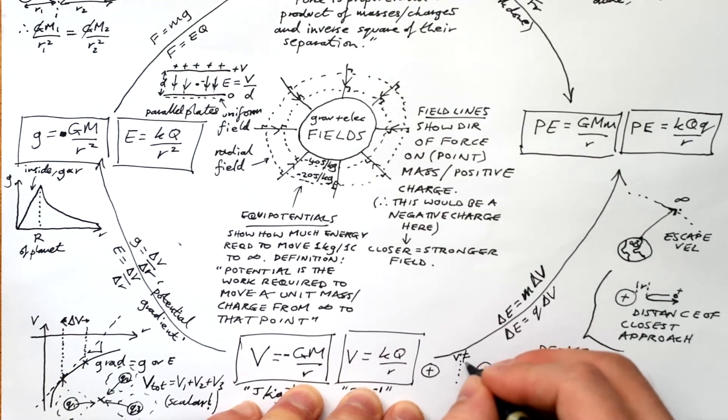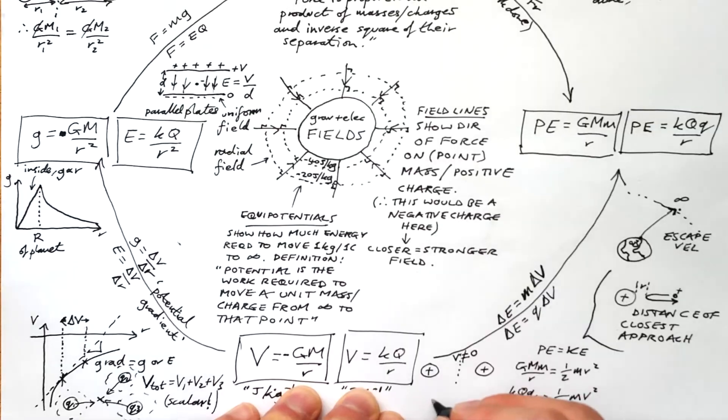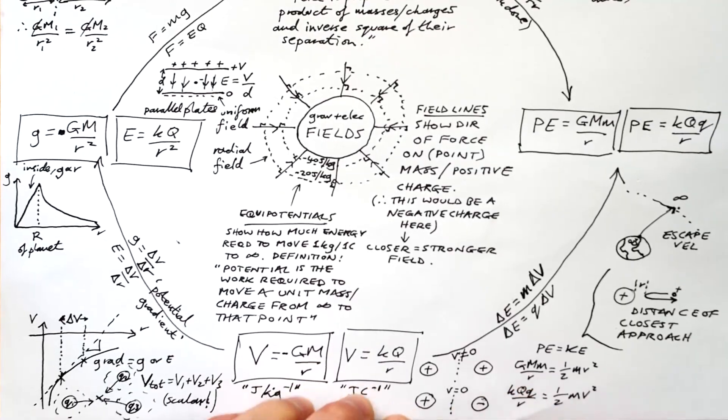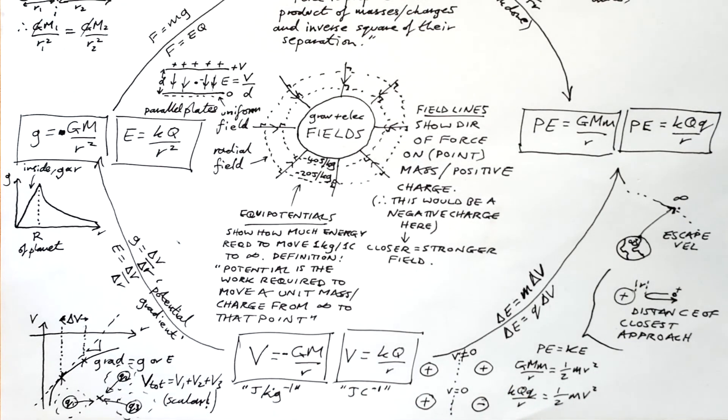Just a reminder that in between two like charges, potential cannot be zero, but it can be zero in between two different charges, because one is providing a positive potential, one's providing a negative potential, they will add up to zero at some point. So I think that's it.